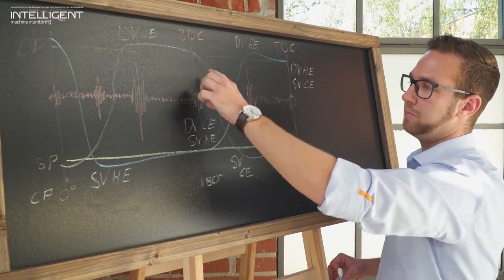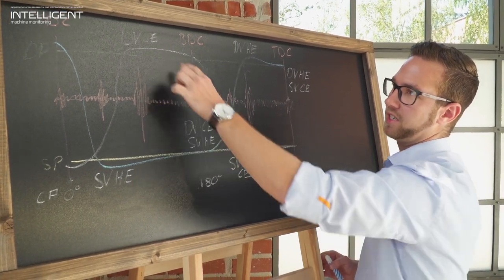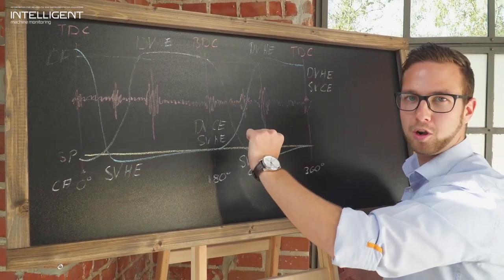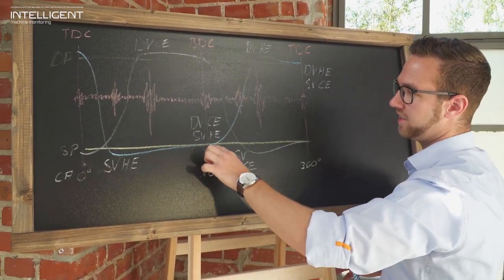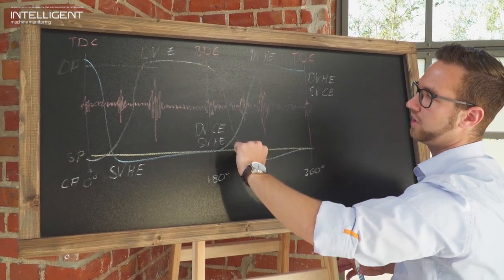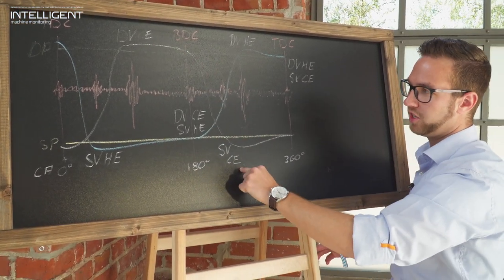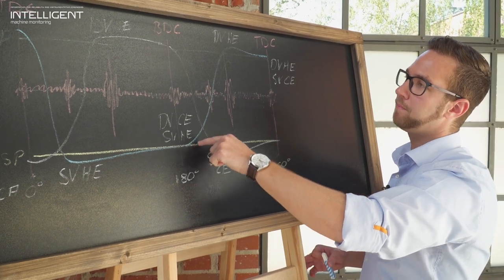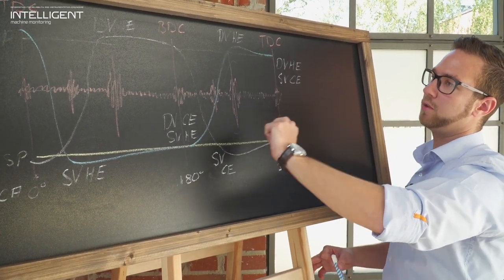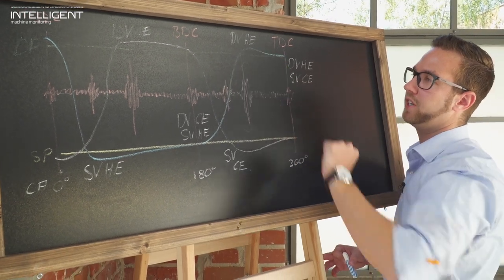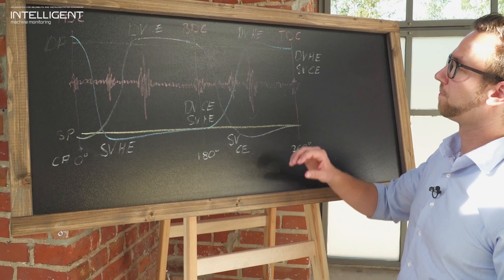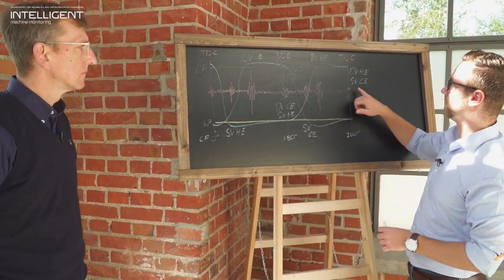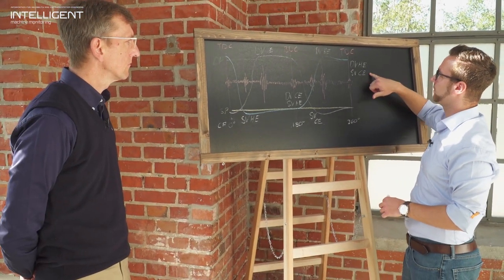Then when we come to the bottom dead center (BDC), the discharge valve crank end which has opened here, and the suction valve head end which has opened here, are closing again, which is usually a smaller peak. If we go further, on the crank end side the pressure is decreasing. We drop below suction pressure level and the suction valve crank end side will open. At the same time, the pressure at the head end side will rise above the discharge pressure level and the discharge valve on the head end side is opening, creating this high peak. The whole thing is repeated for every revolution. On the top dead center, there's the last two valves closing again. All in all, there are eight actions that we can see in this vibration curve.